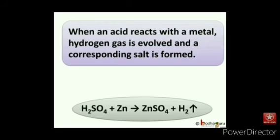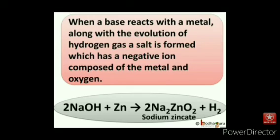Remember: when an acid reacts with a metal, hydrogen gas is evolved and a corresponding salt is formed. For example, H₂SO₄ + Zn → ZnSO₄ + H₂. And when a base reacts with a metal, along with the evolution of hydrogen gas, a salt is formed which has a negative ion composed of the metal and oxygen. For example, 2NaOH + Zn → Na₂ZnO₂ + H₂. Sodium zincate is formed here, which is a salt. However, such reactions are not possible with all the metals.